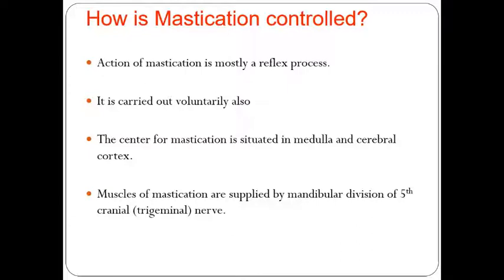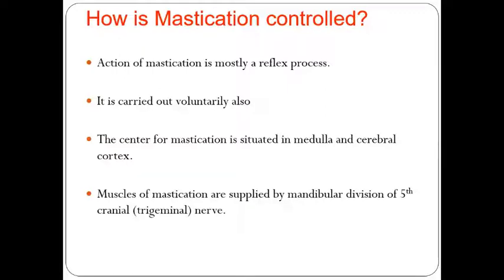The centers for mastication are situated in the medulla oblongata and the cerebral cortex — these are the centers that integrate information for chewing. The muscles of mastication are supplied by the mandibular division of the fifth cranial nerve, the trigeminal nerve.